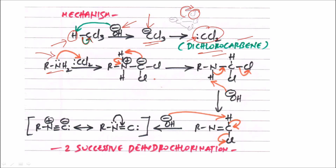Once you get dichlorocarbene, the next step involves the amine. Nitrogen has a lone pair of electrons, and the dichlorocarbene carbon has a slight electrophilic nature due to the presence of two electron-withdrawing chlorine atoms. So nitrogen attacks on the carbon, forming a new bond between nitrogen and carbon. Around nitrogen we now have only four electrons, giving it a positive charge, and around carbon we have five electrons, giving it a negative charge.